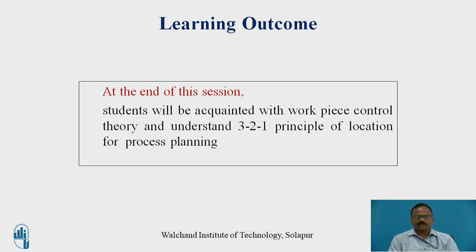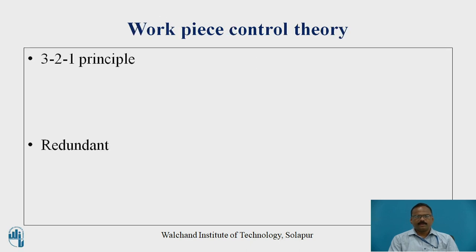Learning outcome: Students will be acquainted with workpiece control theory and understand the 3-2-1 principle of location for process planning. We are going to see what the 3-2-1 principle is and what is meant by redundant.